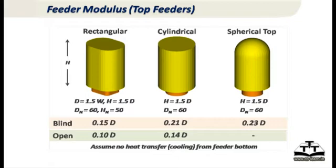The total height of the feeder is H = 1.5 times the diameter. So the spherical top feeder has the highest possible modulus. Of course, it could be blind or open. If it is an open feeder, heat transfer takes place from the top, and in sand casting of steel or aluminum there is a lot of heat transfer by radiation, so modulus comes down by almost one-third. For an open rectangular feeder it is only 0.1, cylindrical is 0.14, and for spherical you cannot have an open top so no value is given.